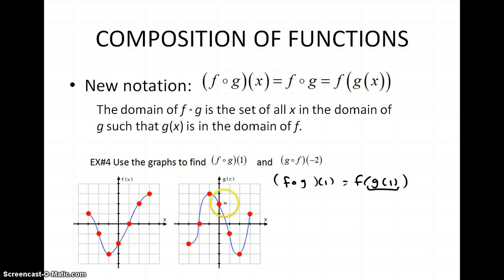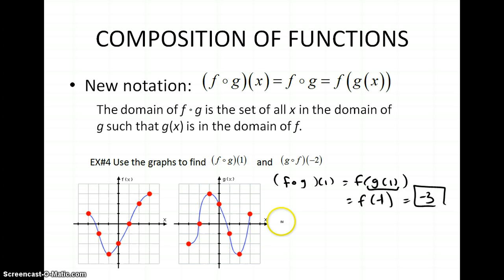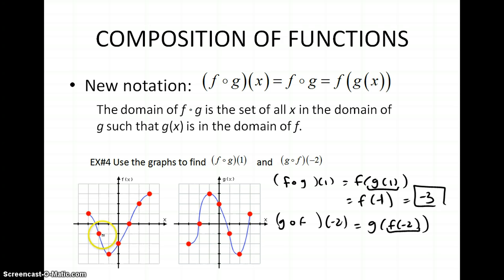To find f∘g(1): first find g of 1 — here's 1, and g of 1 is negative 1. So this becomes f of negative 1. Now our input is negative 1; we go to the f graph at negative 1, and f of negative 1 is negative 3. For number 2, g composed of f of negative 2 equals g of f of negative 2. My input is negative 2, plugged into f gives negative 1. So it's g of negative 1. I go to my g function, find input negative 1, and my output is 3.